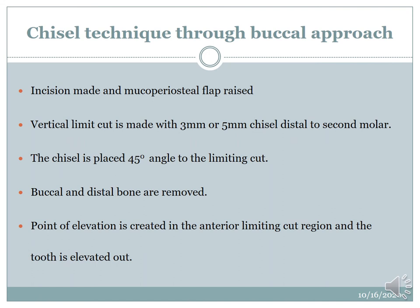For the chisel technique: the incision is made, flap raised, a vertical limiting cut is made with a 3 mm or 5 mm chisel distal to the second molar. The chisel is placed at a 45-degree angle to the limiting cut. Buccal and distal bone are removed. A point of elevation is created in the anterior limiting cut region and the tooth is elevated.